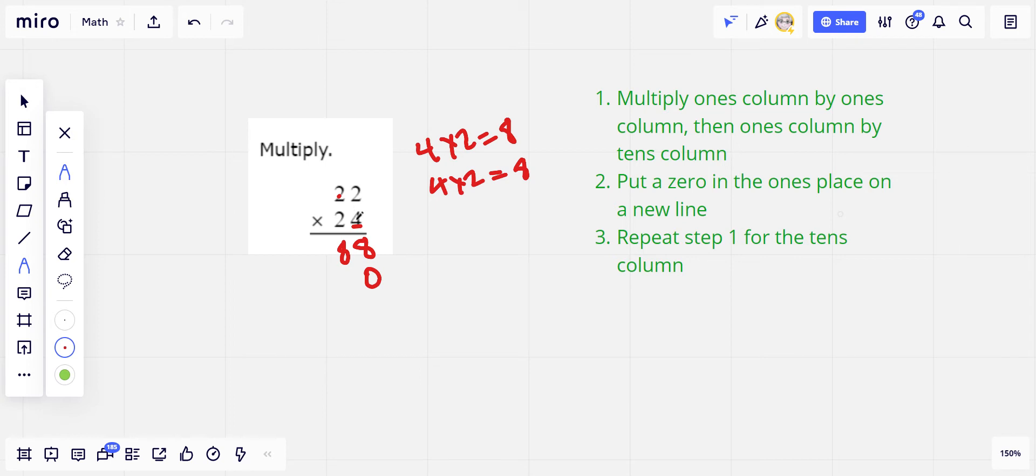So it's really like 20 times 22. We're going to put the zero down here ahead of time and then just think of this as two times 22.